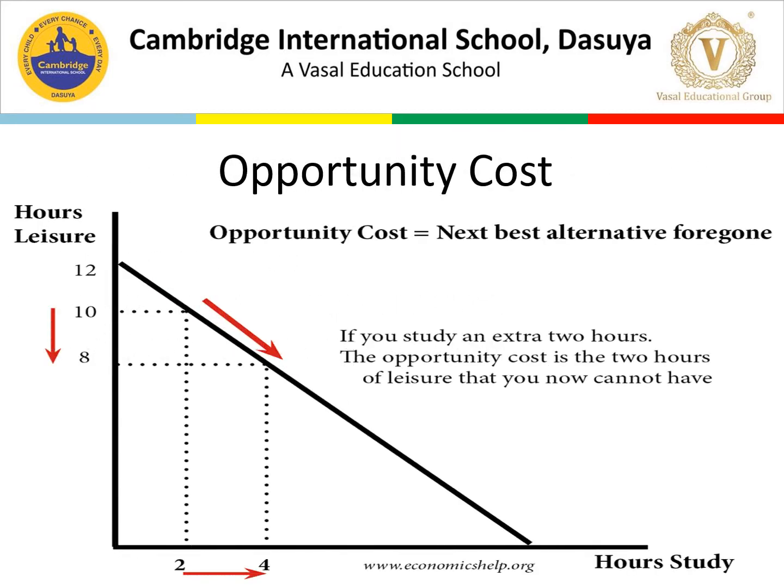Let's start with the first topic: opportunity cost. Everybody has opportunities in their life which they are grabbing to secure a higher position in society. Now, opportunity cost is the cost at which we get the next best alternative — meaning we need to leave the previous option. For example, take leisure hours and hours of study. Everybody enjoys leisure time, but not everyone is ready for study hours.